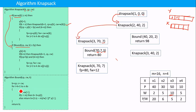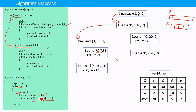The bound function checks from the next item, which is the fourth item. We can add the fourth item completely because adding it keeps the total weight less than 16. If c is less than m, we add the item completely. If c is not less than m — meaning we cannot add that item completely — we add a fraction of that item, similar to the fractional knapsack problem. We compute that profit and return it. Here the bound profit computed is 18, which is returned.